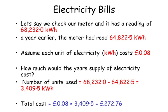Let's say we check our meter and it reads 68,232 kilowatt hours, but a year earlier the meter had read 64,822.5 kilowatt hours. Assuming each unit of electricity costs 8 pence, how much would a year's supply of electricity cost? Firstly, we subtract 64,822.5 from 68,232, giving us 3,409.5 kilowatt hours used in a year.